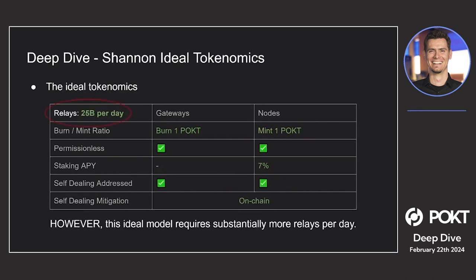When we look at Shannon, what would be the ideal tokenomics? You start with what the ideal environment looks like and what your goals are. The main major change needed is increasing relays from 400 million a day to 25 billion. If we had a lot more relays on the network, this is what Shannon could ultimately look like.